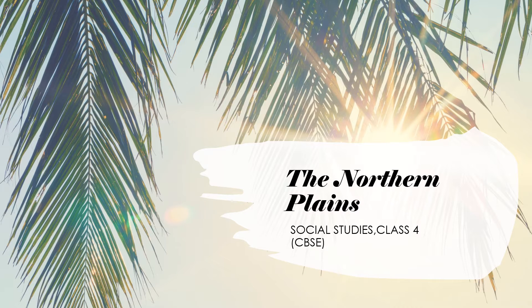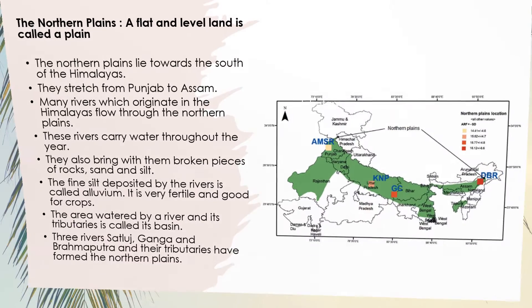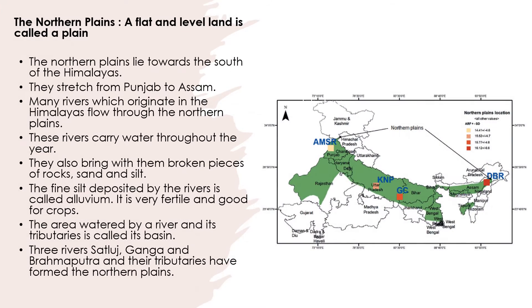Welcome to a short video on the Northern Plains. A flat and living land is called a plain. The Northern Plains lie towards the south of the Himalayas. They stretch from Punjab to Assam. Many rivers which originate in the Himalayas flow through the Northern Plains.